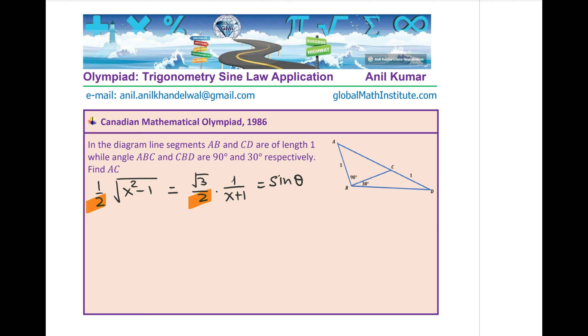So, we have X plus 1 times square root of X squared minus 1 equals to square root of 3. Now, at this stage, we can square both sides, right? So, you get X plus 1 whole squared times X squared minus 1 equals to 3. We can expand this. We will get an equation which will be of degree 4. And then, we will factor and solve.